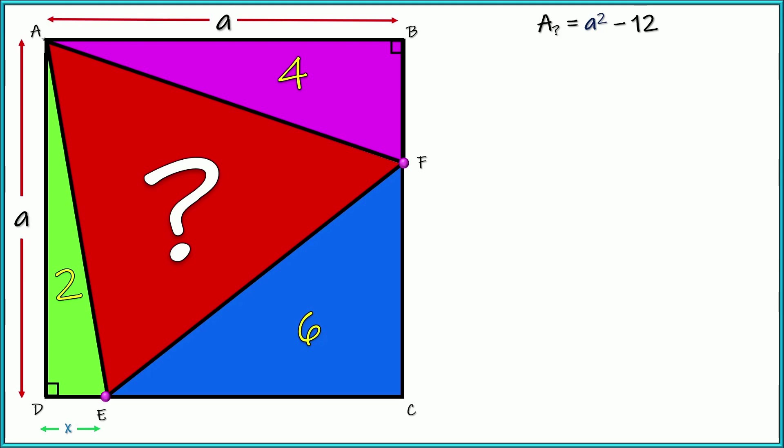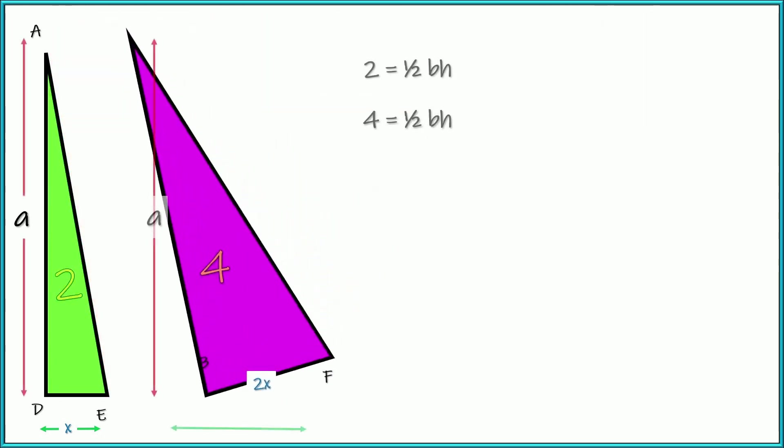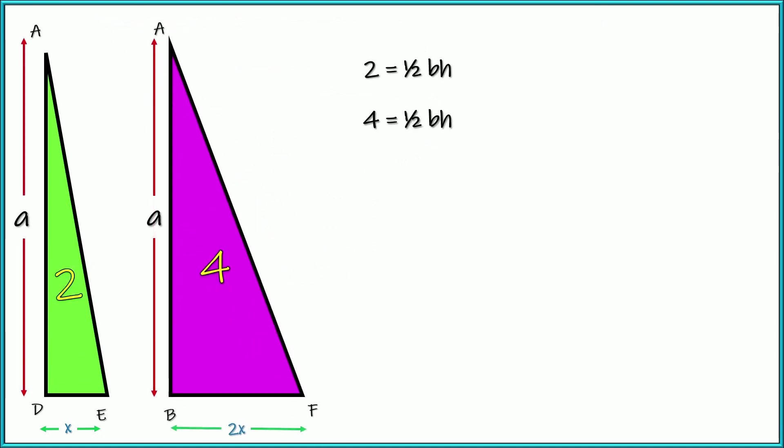All right. Now let's call this little distance right here D to E. Let's call that X. And let's call B to F 2X. And maybe it's not entirely clear why B to F is double the distance. So let's take a look at these two triangles right here. One half base times height is, of course, the area formula for a right triangle. And in this case, the heights are both the same.